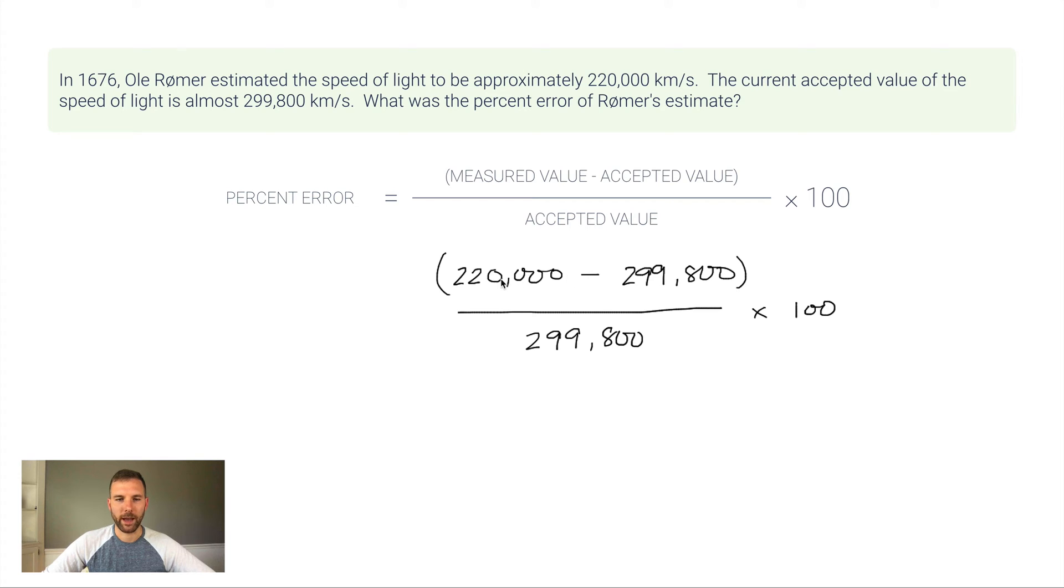Pause the video and try this one on your own. I'll work through it now. 220,000 minus 299,800 gives me negative 79,800. I'm subtracting, so I'm looking at decimal places—there's no decimal places in either number, so I just round to the nearest whole number. Then I divide by 299,800 and get negative 26.6%, which is three significant figures.